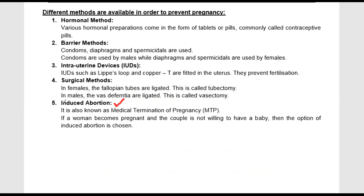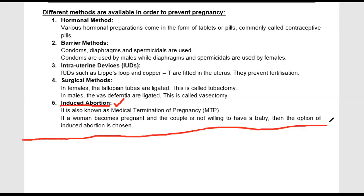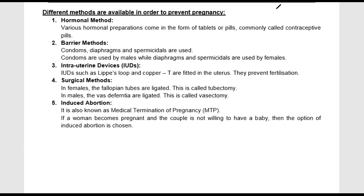Abortion is a legal process, so many reasons and conditions must be satisfied. These are the methods by which pregnancy can be prevented or, if pregnancy has occurred, terminated. This concludes the chapter on sexual reproduction in human beings. Thank you.